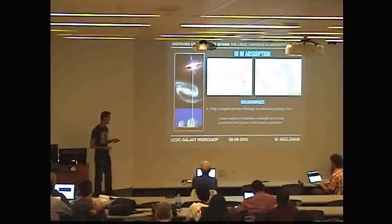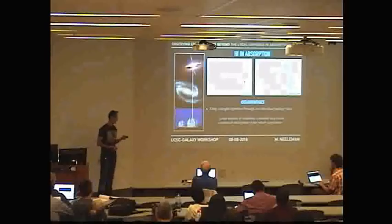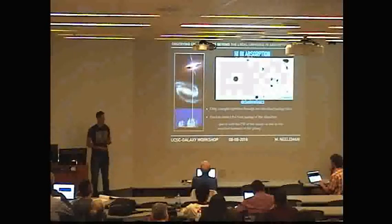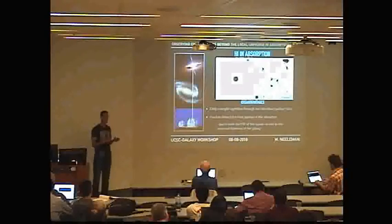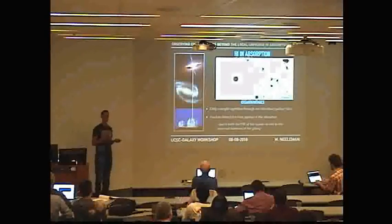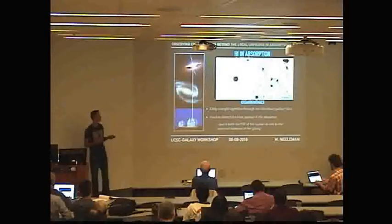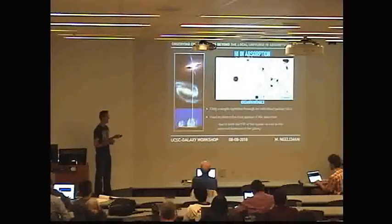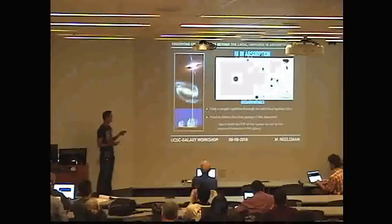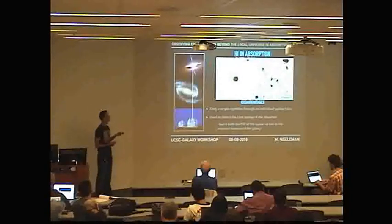It's not a surprise, but good to see. Another trend is that the amount of neutral gas per volume seems to be increasing with redshift. Another major disadvantage is that it's very hard to find the galaxy associated with these absorbers.